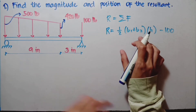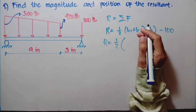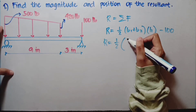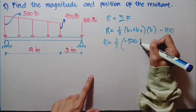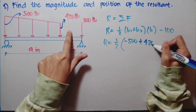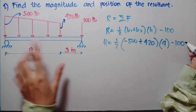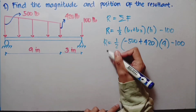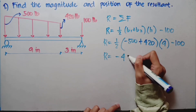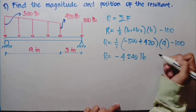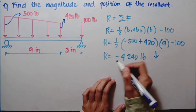Now, let's substitute the values based on the given figure. For one-half, B1 is 500 — negative 500 since the force is going downward — and B2 is 420 pounds, times the height which is 9 inches, minus 100 for our simple load. When we calculate everything, R comes out to negative 4,240 pounds. This is the magnitude of our resultant, meaning it is going downward since it's negative.